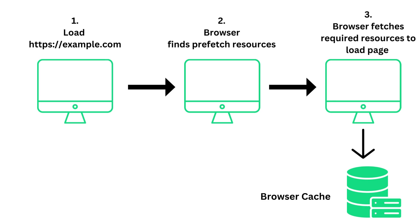First it will load example.com, then it will find the prefetch resources from that browser. Then it will fetch the required resources to load the particular page and cache them inside the browser. And then it will wait for the user to click that link.